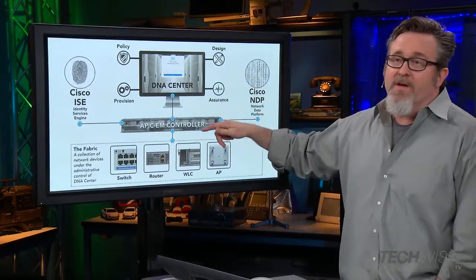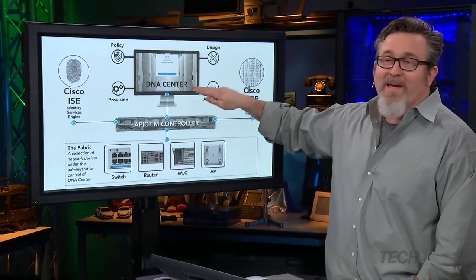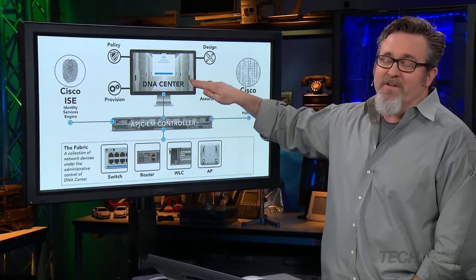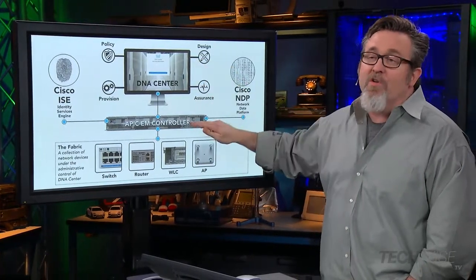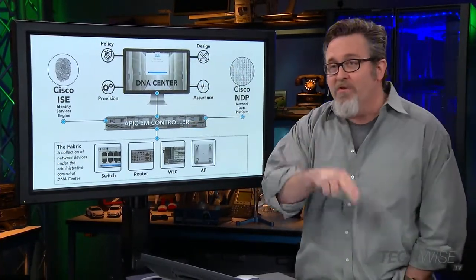There is just so much to consider when we talk about the architectural change that offers this many benefits. So what I wanted to do was highlight a bit about what we covered on that previous show. This diagram shows the centrality of two things: the APIC-EM controller and DNA Center, both here at the center. The controller's not new; however, what you can now do with it changes everything. The APIC-EM now functions as an SDN controller.